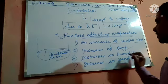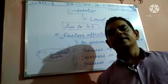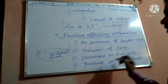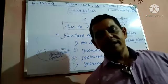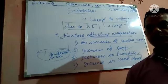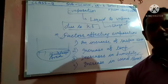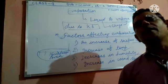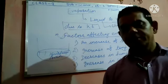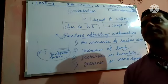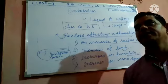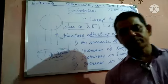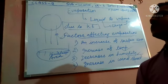The third factor is decrease in humidity. When evaporation occurs, water vapor is released into the outside air. If humidity decreases, it affects the rate of evaporation. When water vapor is already present in the air, then the rate of evaporation decreases, because the air is already carrying water vapor.